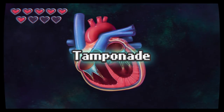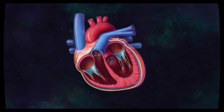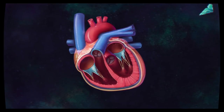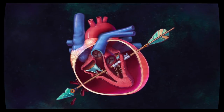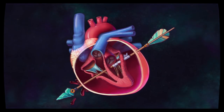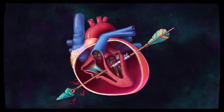Now for the T's. First up, tamponade. The pericardium is an inflexible fibrous bag that surrounds the heart. If extra material accumulates here, such as blood in a cardiac trauma, it will quickly crush the heart and prevent it from pumping. This can be suggested on a chest x-ray, but it's diagnosed with an echocardiogram.